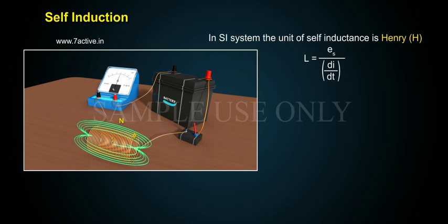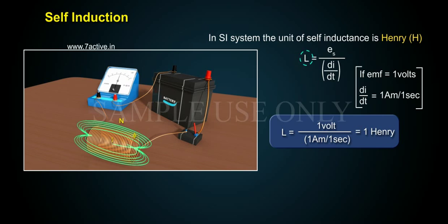L equals ES by DI by DT. If EMF equals 1 volt, DI by DT equals 1 ampere per 1 second, then L equals 1 volt by 1 ampere by 1 second, equals 1 Henry.